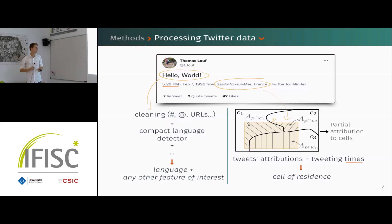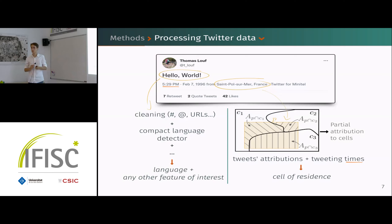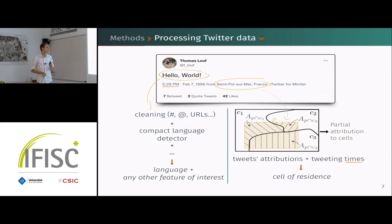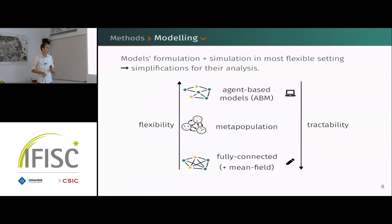Whenever we want to assign a set of residences to the users in our dataset, we use first this attribution of tweets and also the tweeting times, which are available, to determine the set of residences using some heuristics.